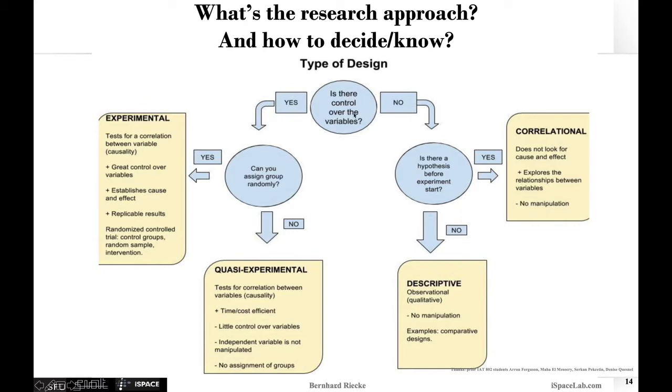To do this, you need to control some variables, some independent variables. If you cannot really assign the groups randomly, then you're in the range of quasi-experimental research. This tests more for correlation between variables. It does test for causality, but if you cannot assign the different groups, there might be some confounds. On the positive side, this is more time and cost efficient sometimes, but you have little control over the variables. You cannot really infer causality here.